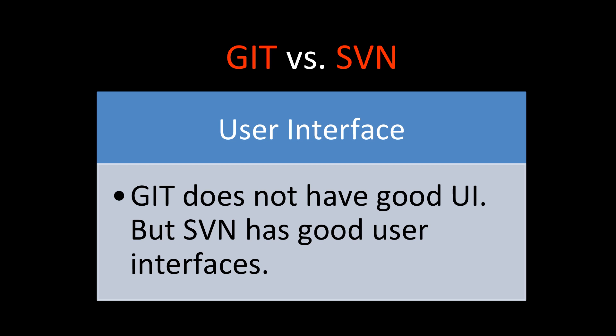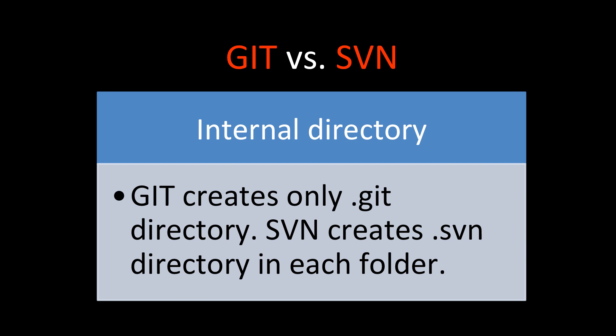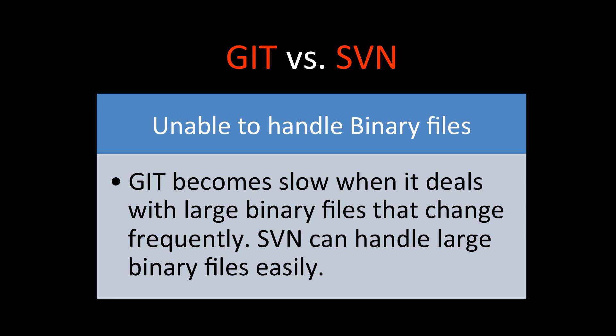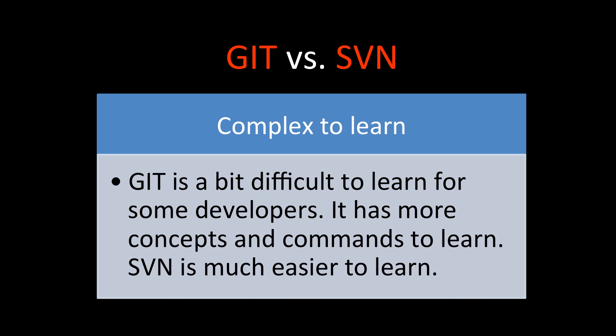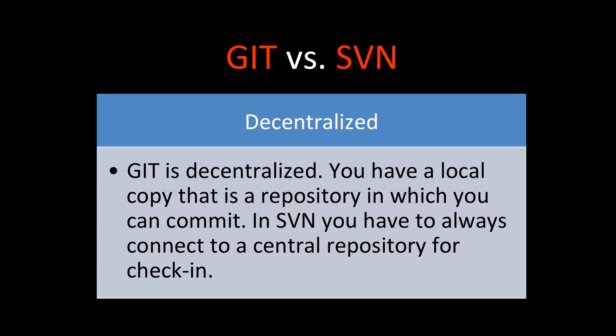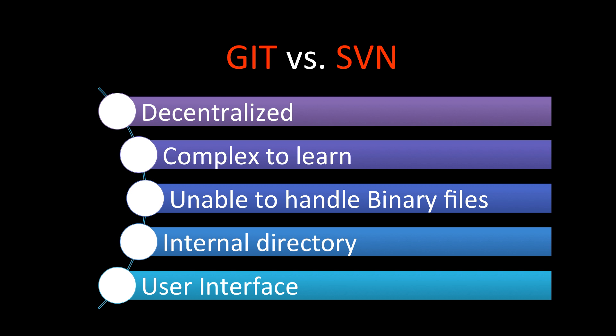To reiterate, the differences between Git and SVN are: user interface, internal directory structure, inability to handle binary files, complex to learn, and decentralized architecture.